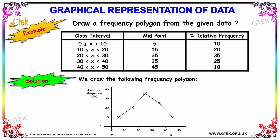Let's go with an example — we need to draw a frequency polygon for the given data. We have the class intervals, the midpoint, and the percentage in terms of relative frequency. We'll proceed with class interval on the x-axis and relative frequency on the y-axis. The class interval 0 to 10 has a midpoint of 5, with a relative frequency of 10.